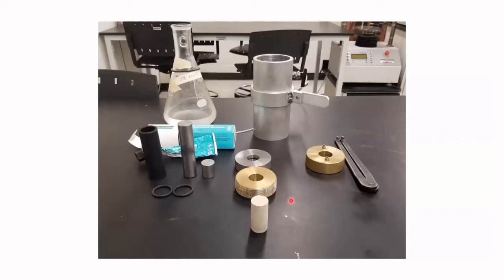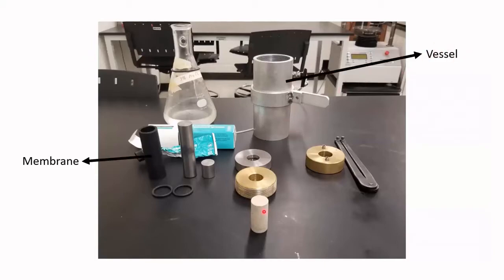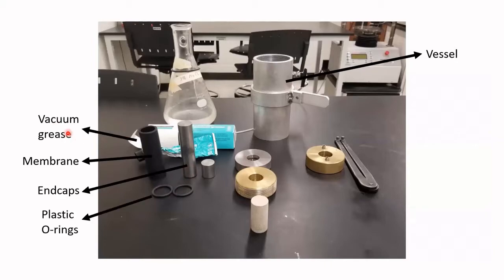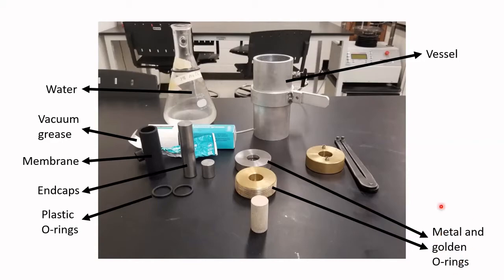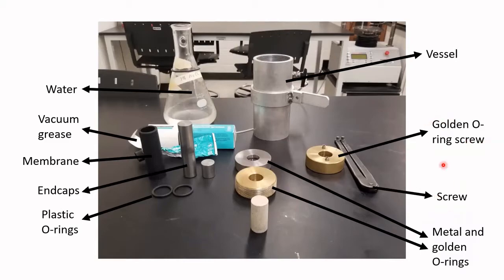Now it's time to prepare the vessel with our sample. The components we are using are: the vessel, the membrane to isolate the sample from the fluid, the end caps, the plastic O-rings, the vacuum grease, water as our confining fluid, the metal and golden O-rings to isolate the confining fluid from the outside, and the screws to secure the vessel.